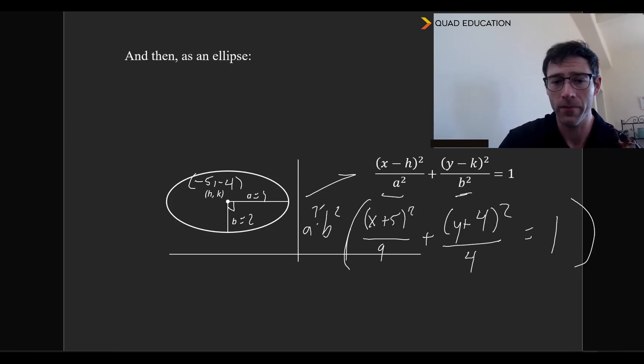So in this case, that would be 9 times 4, so 36. So what that is going to do is, we're going to have 36 times (x + 5)² over 9 plus 36 times (y + 4)² over 4, and that's going to equal 36.